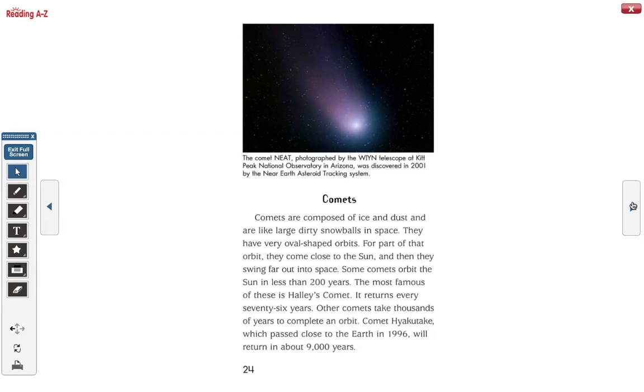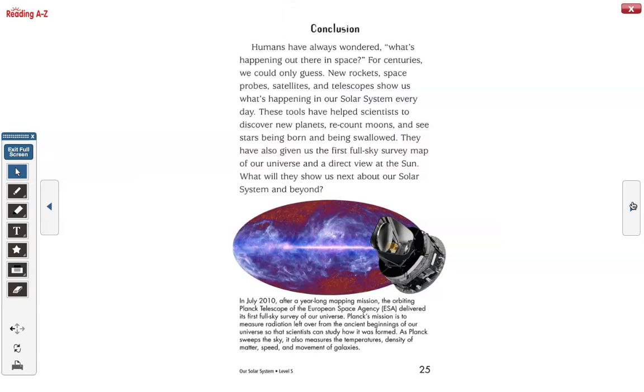Comets are composed of ice and dust and are like large, dirty snowballs in space. They have very oval-shaped orbits. For part of that orbit, they come close to the sun, then they swing far out into space. Some comets orbit the sun in less than 200 years. The most famous of these is Halley's Comet. It returns every 76 years. Other comets take thousands of years to complete an orbit. Comet Hyakutake, which passed close to the Earth in 1996, will return in about 9,000 years.